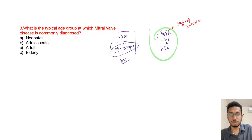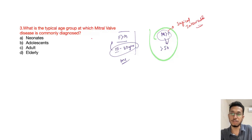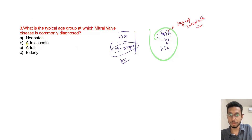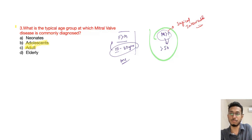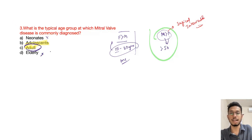The typical age group at which mitral valve prolapse is commonly diagnosed is the adult or adolescent variety. The best answer is the adult group. It is not neonates and not elderly.